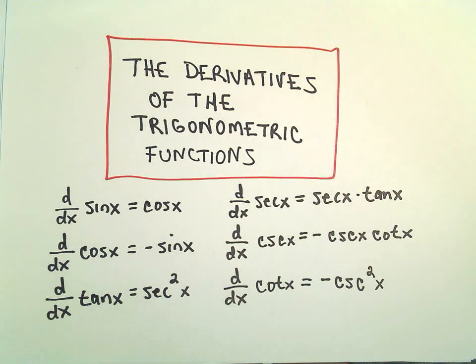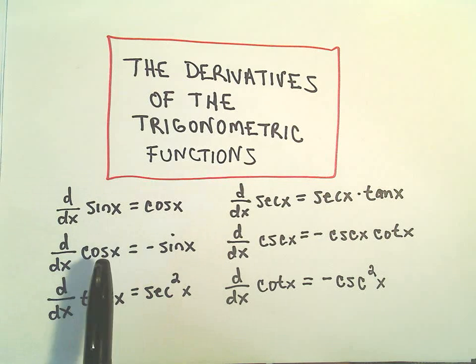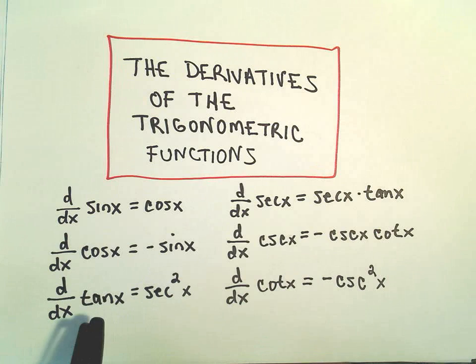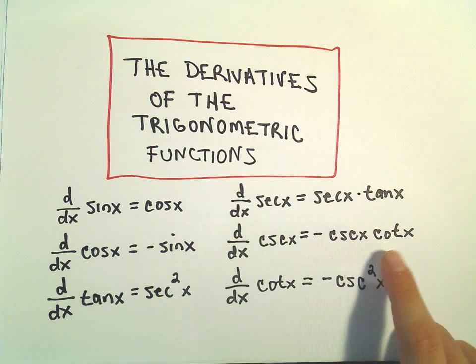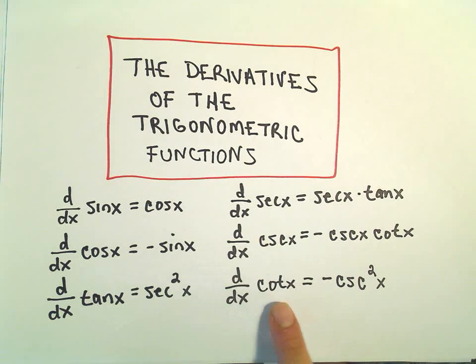Alright, here we're going to do some examples related to the derivatives of the trig functions. Here's all the formulas again. The derivative of sine is cosine, the derivative of cosine is negative sine, the derivative of tangent is secant squared, the derivative of secant is secant tangent, the derivative of cosecant is negative cosecant cotangent, and the derivative of cotangent is negative cosecant squared.